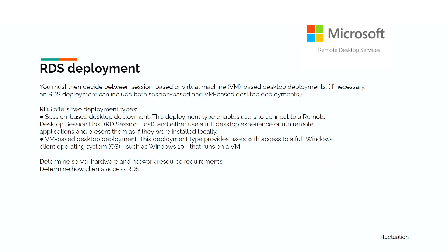For RDS deployment, you need to decide between session-based or VM/VDI deployment — or both. RDS offers two types: session-based desktop deployment, where you have one server providing a full experience and all clients connect to it with applications installed there; and VM-based desktop deployment, which is VDI, providing users access to a full Windows client operating system such as Windows 10 running on a VM. You must determine server hardware, network requirements, and how clients will access RDS.